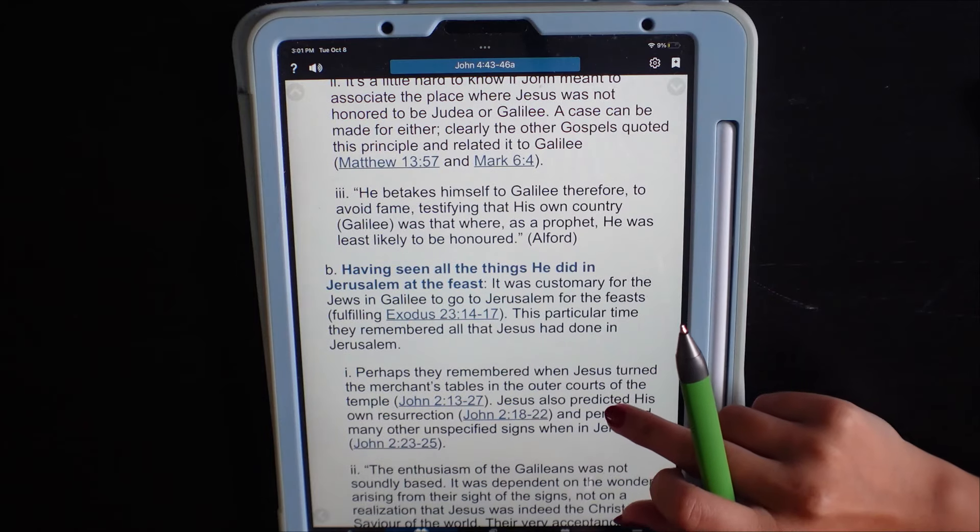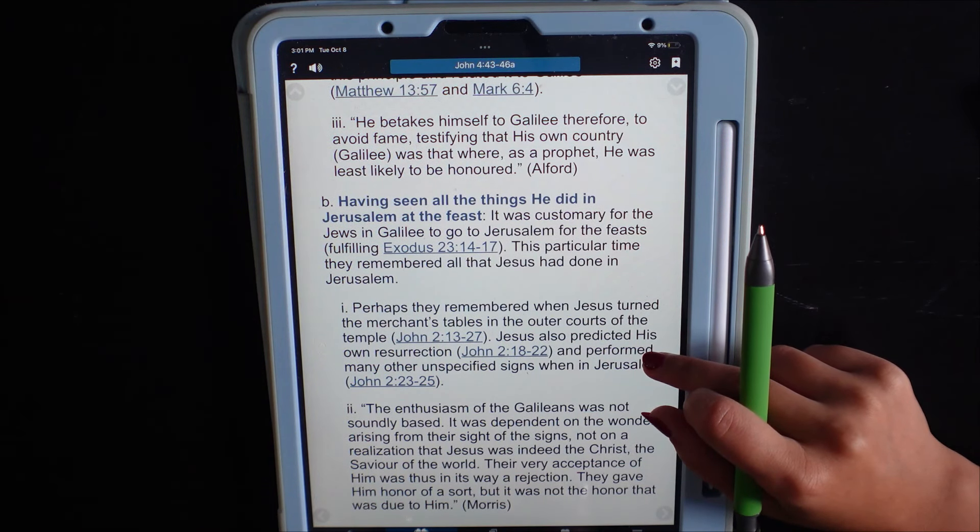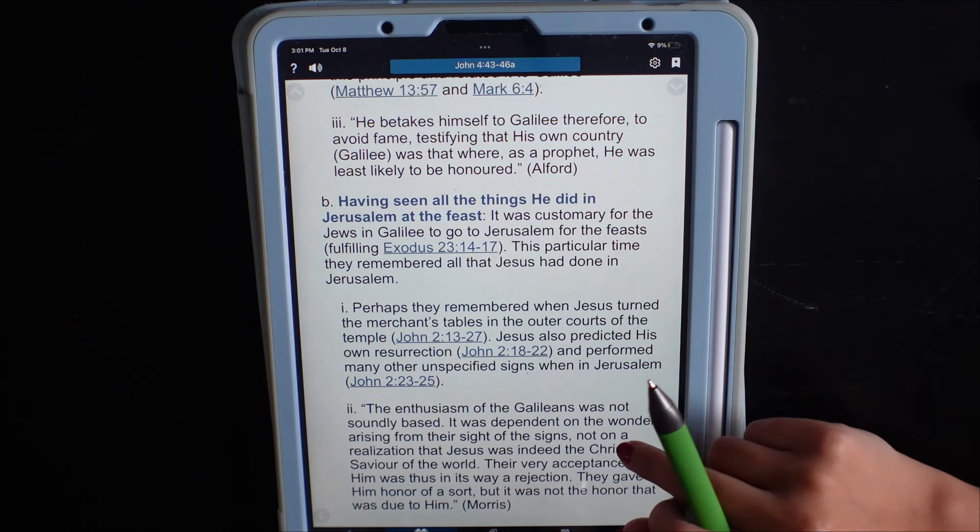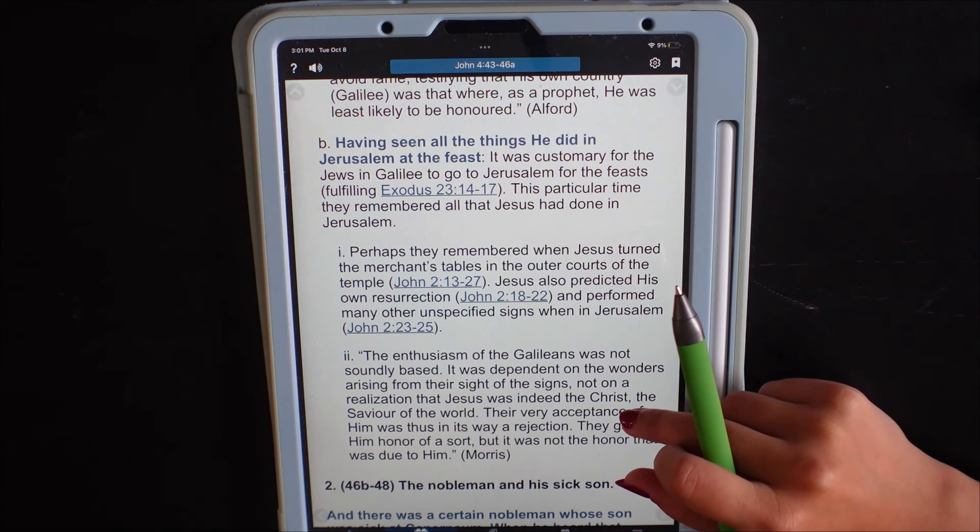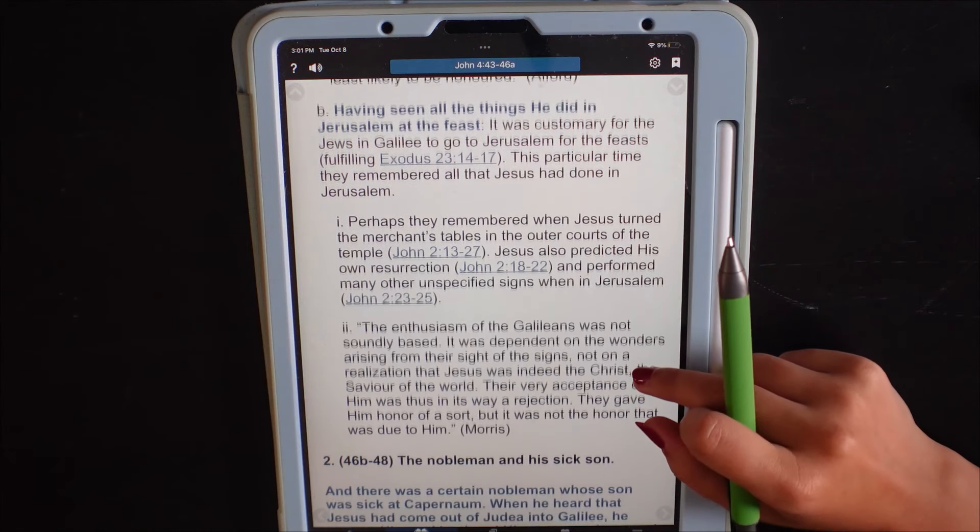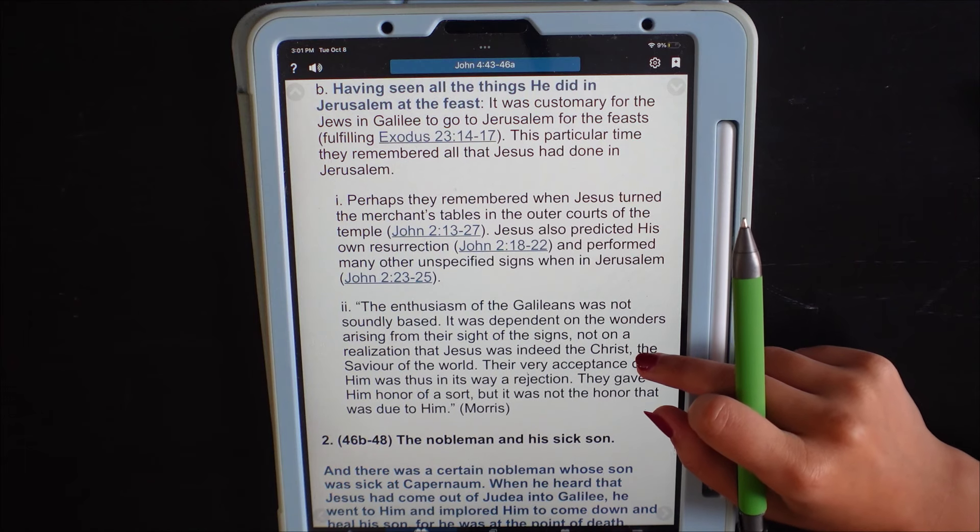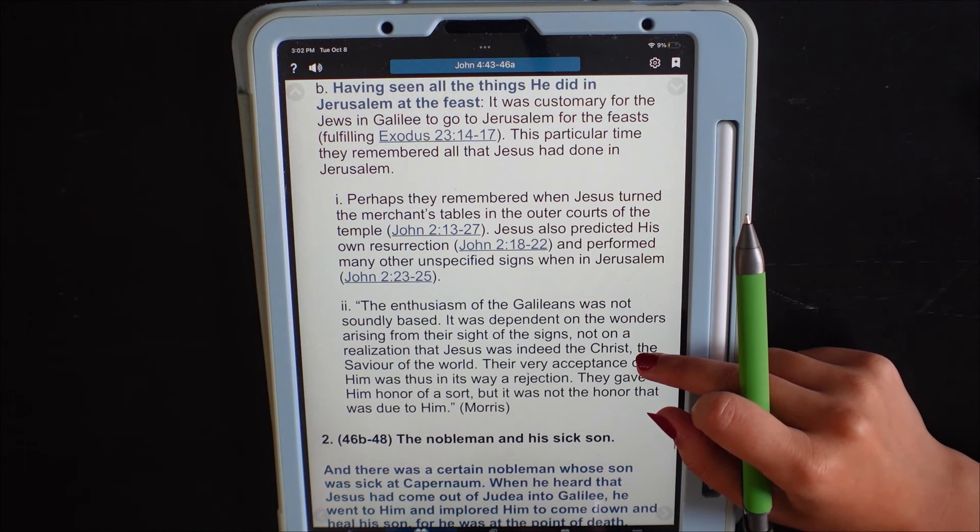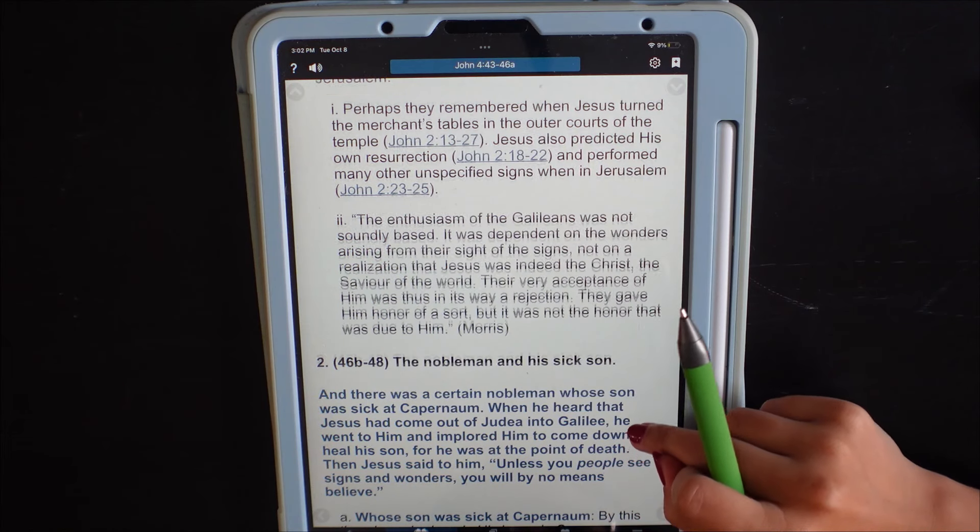He betakes himself to Galilee, therefore to avoid fame, testifying that his own country was that where, as a prophet, he was least likely to be honored. Having seen all the things he did in Jerusalem at the feast, it was customary for the Jews in Galilee to go to Jerusalem for the feasts. This particular time, they remembered all that Jesus had done in Jerusalem. Perhaps they remembered when Jesus turned the merchants' tables in the outer courts. Jesus also predicted his own resurrection and performed many other unspecified signs when in Jerusalem.